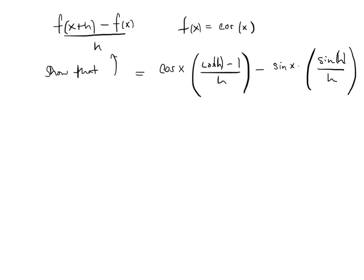All right, this is kind of an oddball problem in the homework. It's a difference quotient involving cosine. But what they want you to do is run cosine through the difference quotient grinder and show that it equals all this mess.